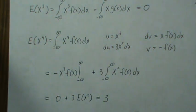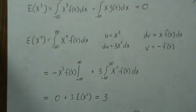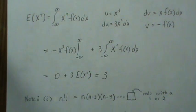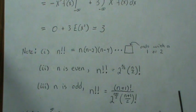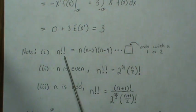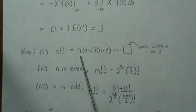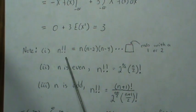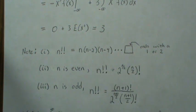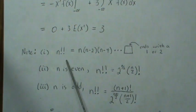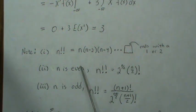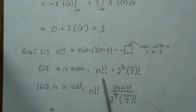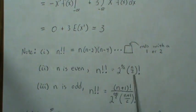Now let's prove it very quickly for any even exponent. I need to introduce something called a double factorial. A double factorial takes that number, subtracts 2 and multiplies, then subtracts 2 from that and multiplies, and keeps going until you get to a 1 or a 2. And you can show that if n is even, the double factorial is written in factorial form as a specific expression, and if it's odd it's another expression.